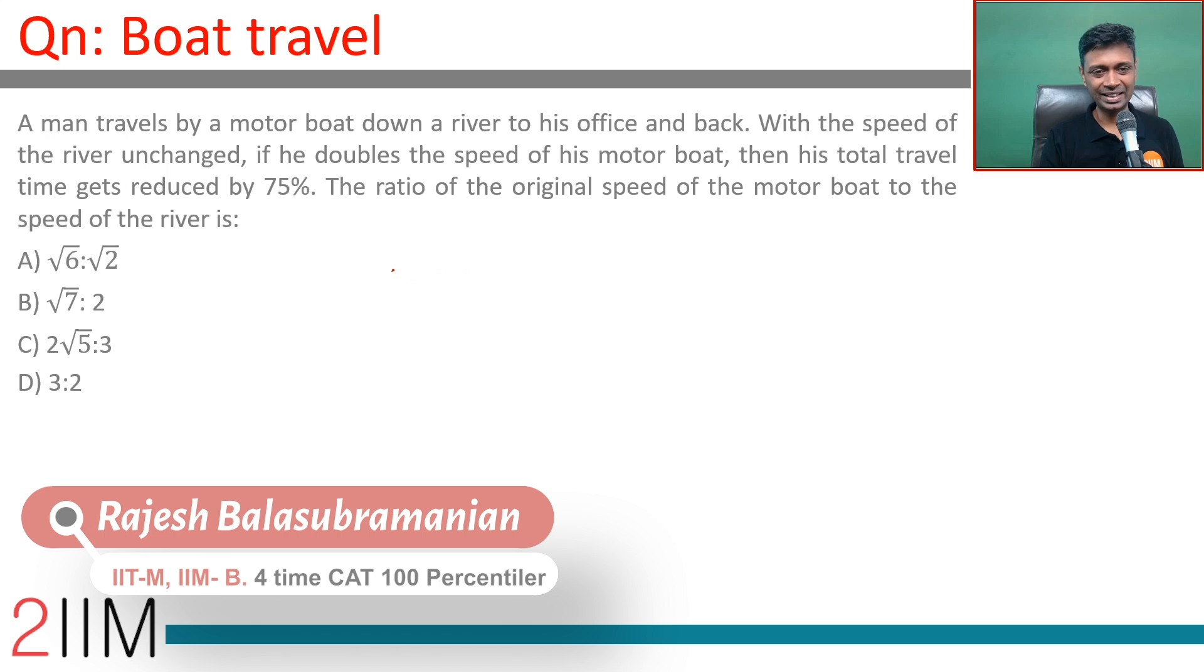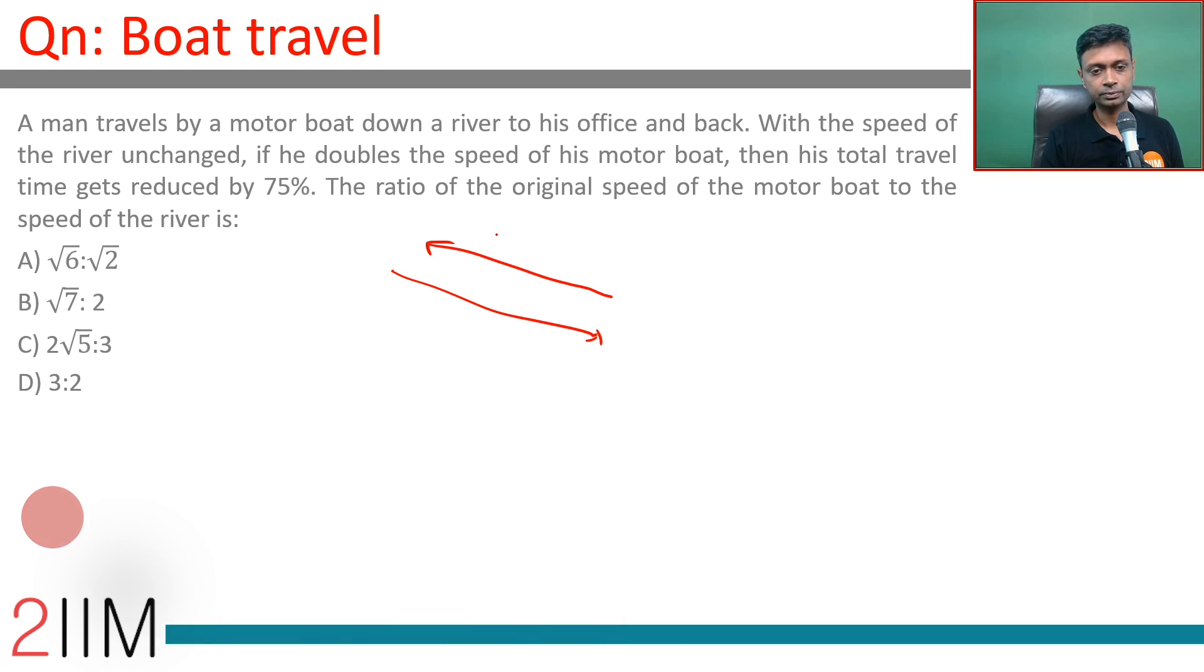Let's say he goes down and then comes back up. Let's say his boat speed is B, stream speed is S. Going down he has B plus S, coming up he has B minus S.